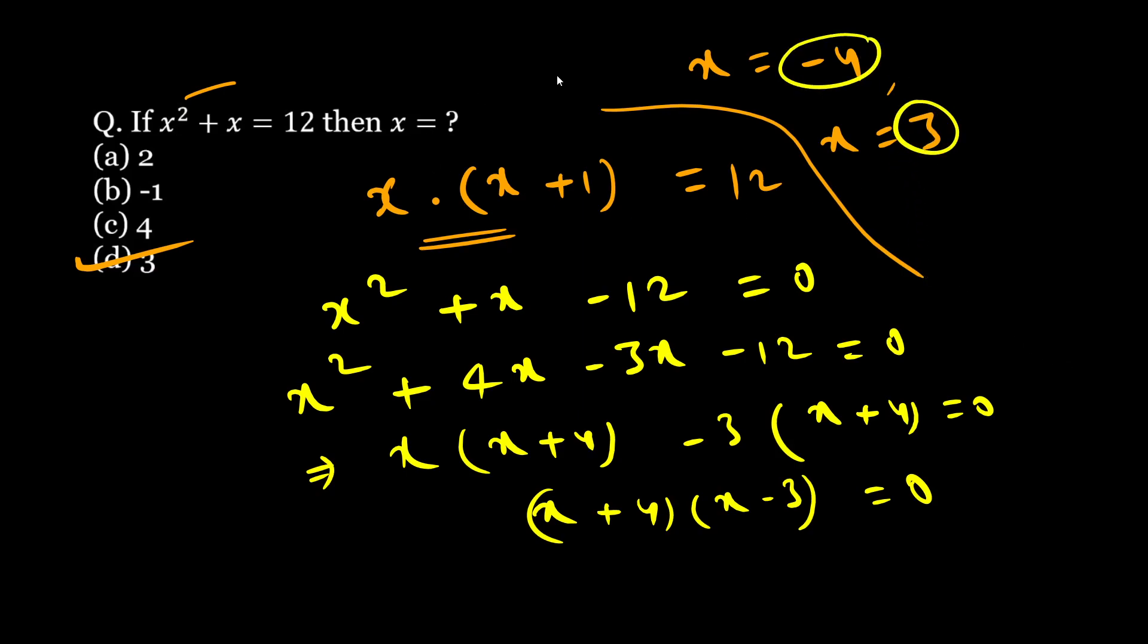You can cross check also. You can put the value of minus 4 here, so minus 4 square that would be 16 minus 4, 12. This also satisfies. You can put 3 here: 3 square, 9 plus 3 equal to 12. This also satisfies. So both satisfy the original equation and hence both are the solutions.